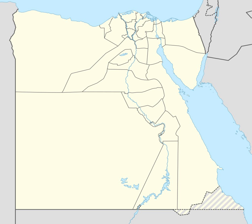For most of Pharaonic Egypt's history, Thebes was the administrative center of Upper Egypt. After its devastation by the Assyrians, its importance declined. Under the Ptolemies, Ptolemais Hermiou took over the role of Upper Egypt's capital city. Upper Egypt was represented by the tall white crown Hedjet, and its symbols were the flowering lotus and the sedge.